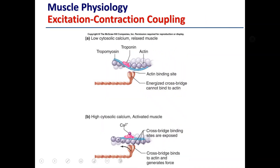In the previous video, we looked a lot at the structure of the thick and thin filaments, but we didn't talk a lot about their function. Here in diagram A, you see typical thin and thick filaments. We see our actin molecules, our double helical strand, our tropomyosin band, which is blocking the myosin binding sites on the actin molecules, and troponin, which is attached to this tropomyosin band and regulates its orientation.